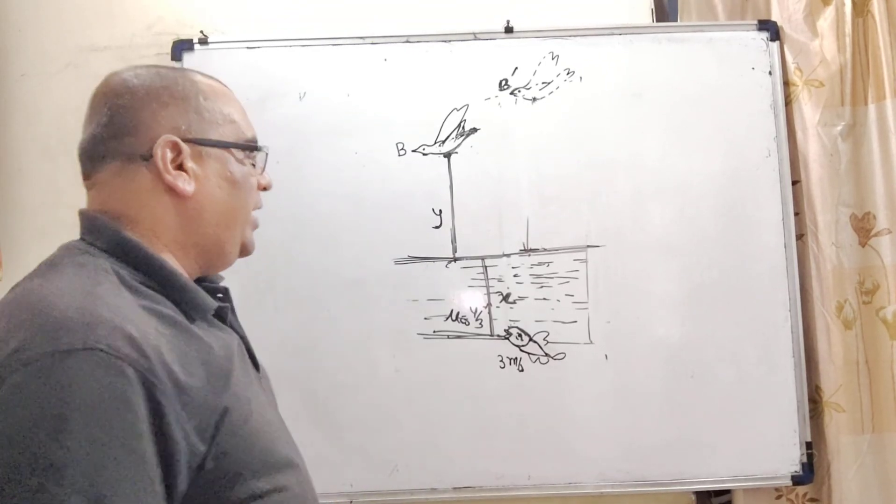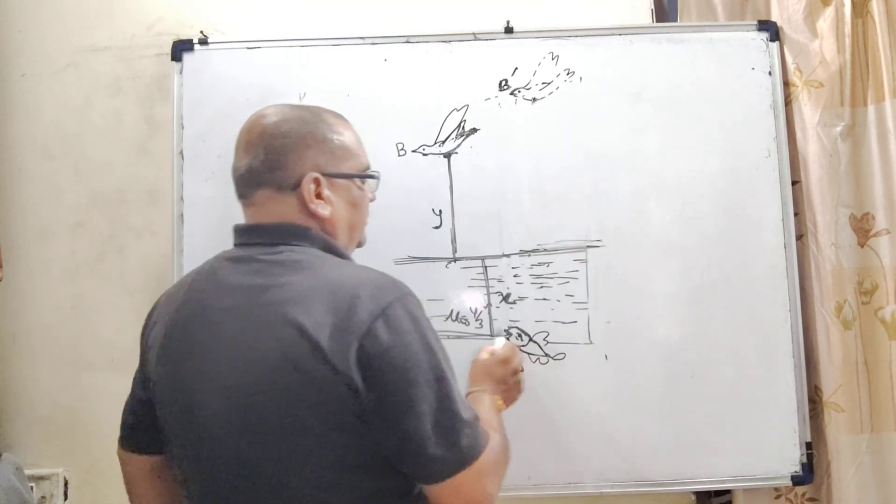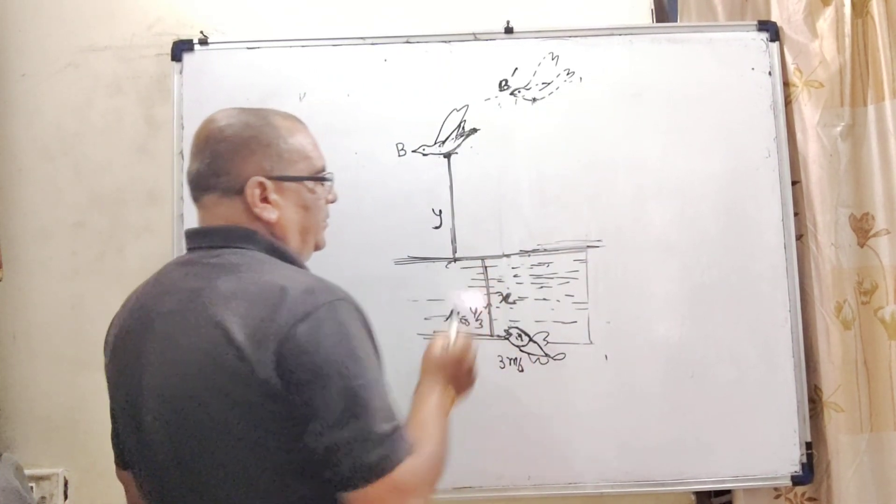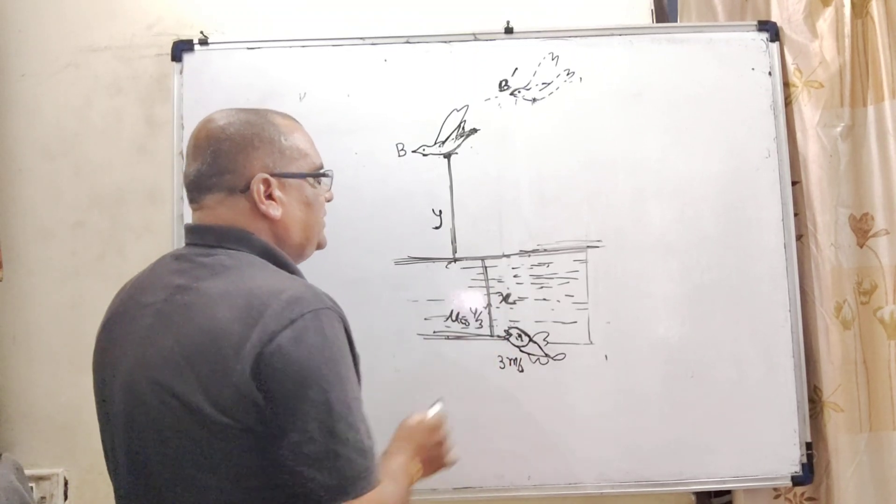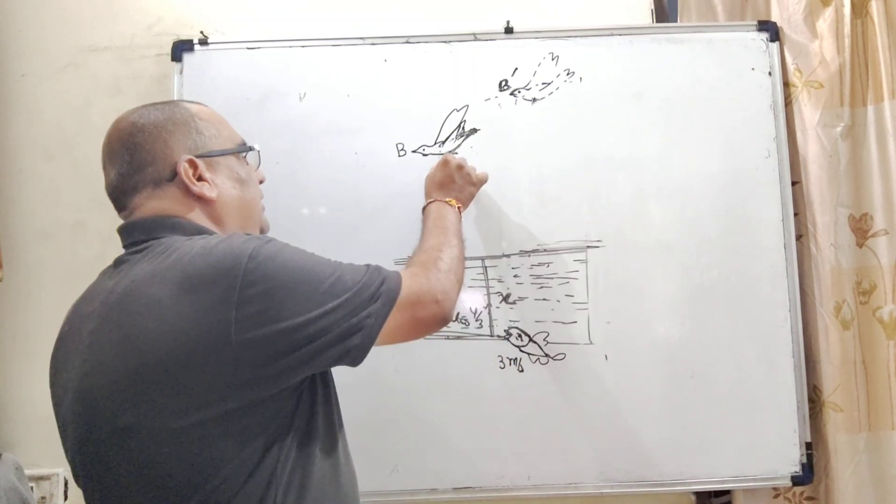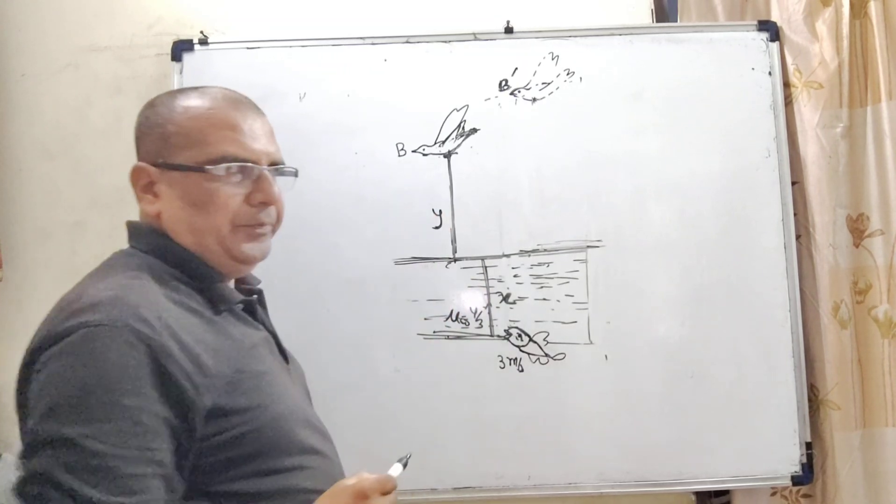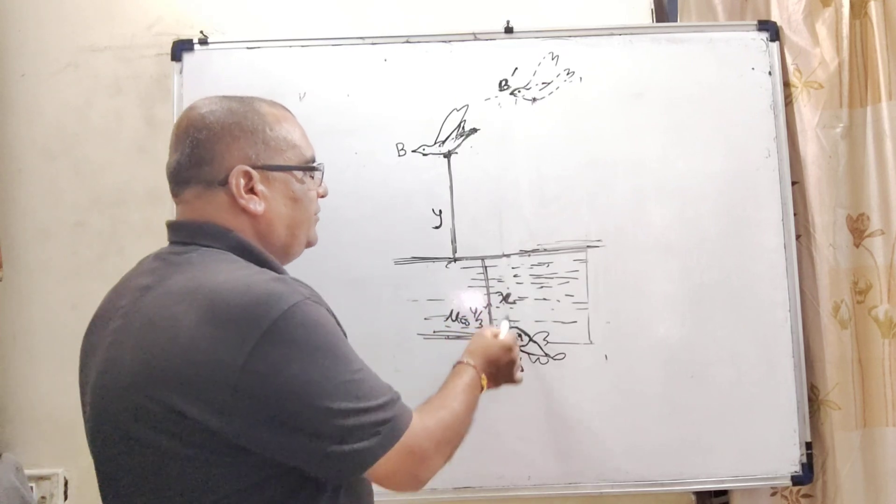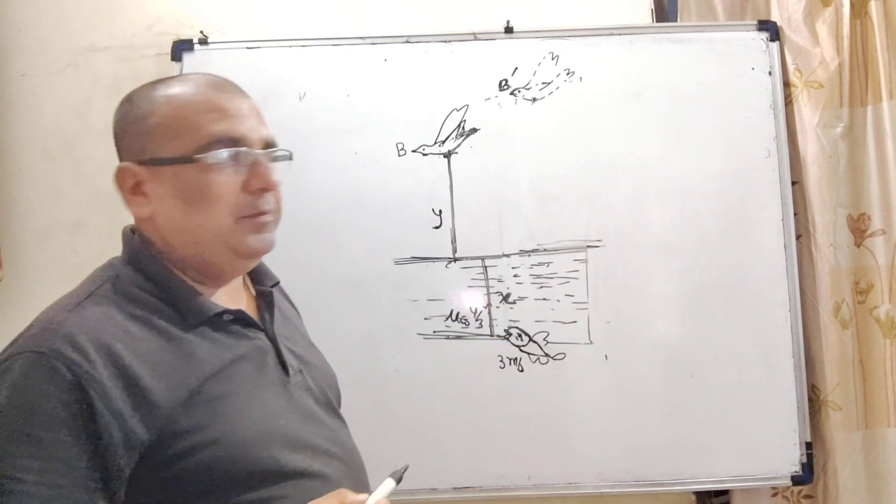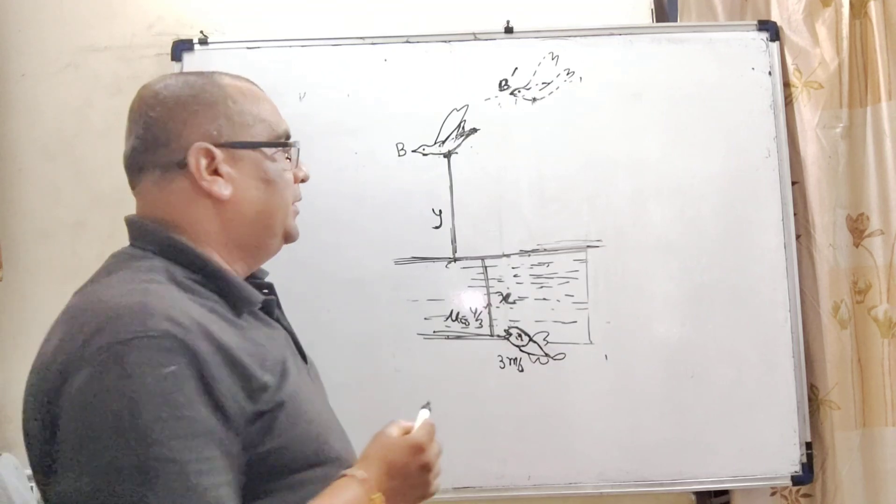Now, according to the question, we have given a lake. Here, a fish rising up with velocity of 3 meter per second to the surface. And here, a bird is flying over this lake at a distance, consider that is y. Here, as we know that any object which we have seen from denser medium to rarer medium, it looks like slightly higher than actual.